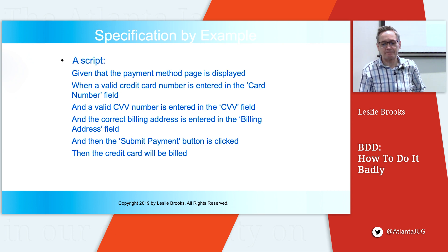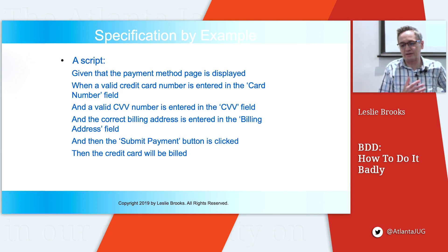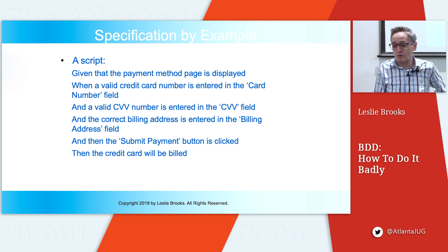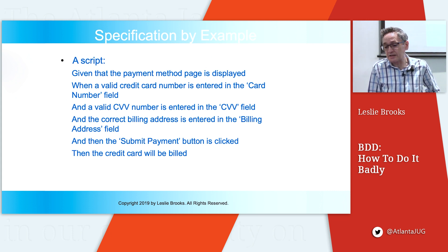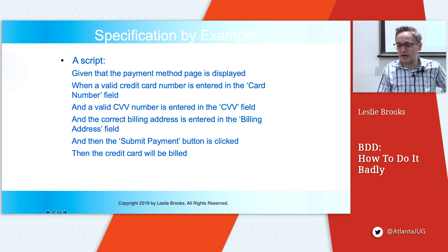Here's a script: given that the payment method page is displayed, when a valid credit card is entered and a valid CVV number is entered and the correct billing address is entered and the submit payment button is clicked, then the credit card will be billed. What is the business purpose of this test? Is it to verify the credit card must be valid, or that the CVV must be correct, or that a completed purchase results in a charge? We can't answer any of these questions because this is a script — it's not a business requirement.